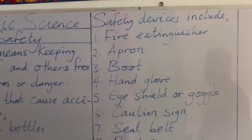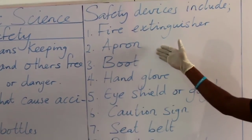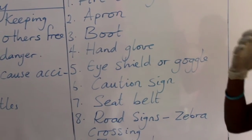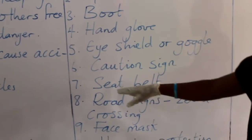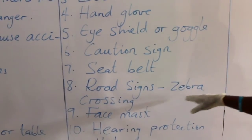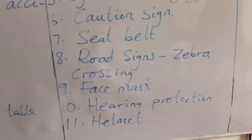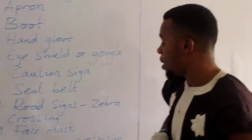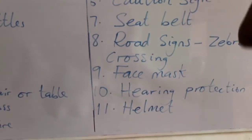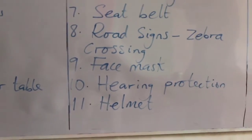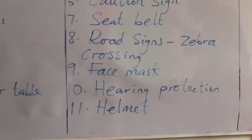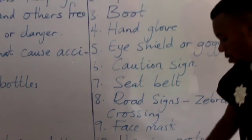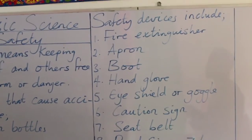These are the common safety devices: fire extinguisher, apron, boots, hand gloves, eyeshade or goggles, caution sign, seatbelt, road signs and zebra crossing, face mask, hearing protection, and helmet. Face masks are especially relevant because you see a lot of people putting them on because of what is currently trending. Hearing protection is worn like a headphone but is used to protect your ears from loud machinery, not for music.